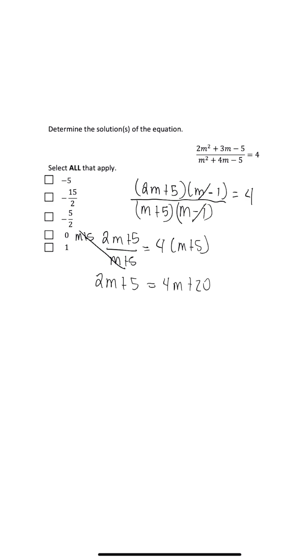Once we start simplifying, we get 5 is equal to 2m plus 20. When we subtract 20 from both sides, we have negative 15 is equal to 2m. And once we divide by 2, we get m is equal to negative 15 over 2.